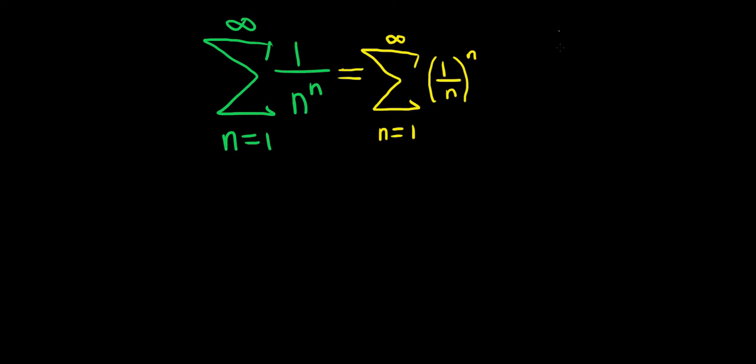The reason you can do that is because 1 to the n is 1. So if you rewrite the inside piece, you just get 1 to the n over n to the n, which is just 1 over n to the n. So you end up with the same thing.